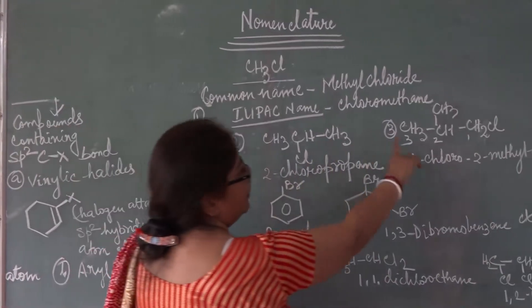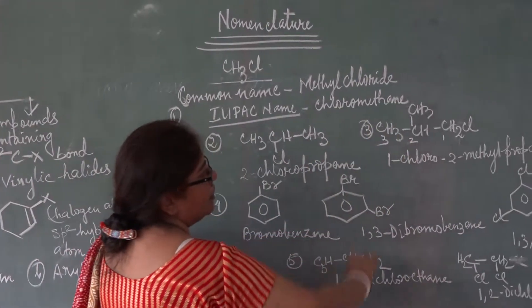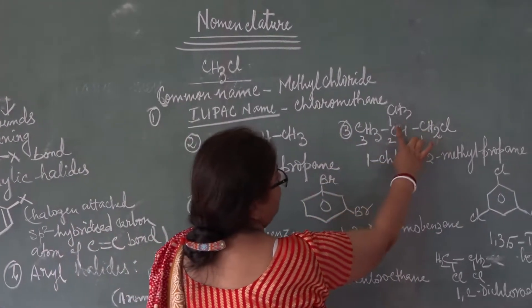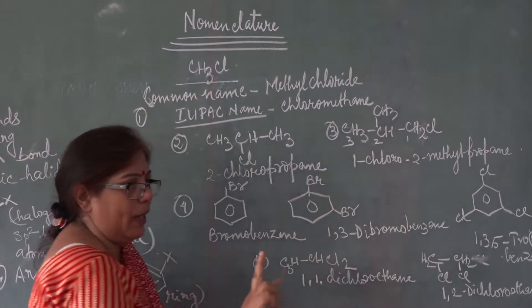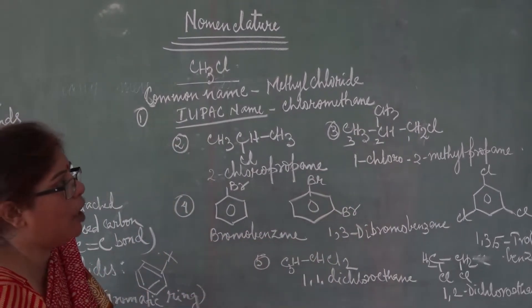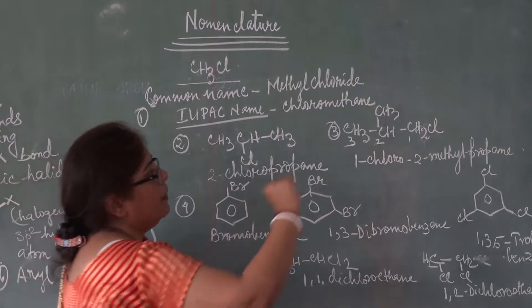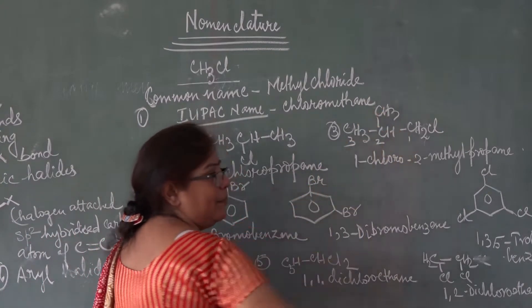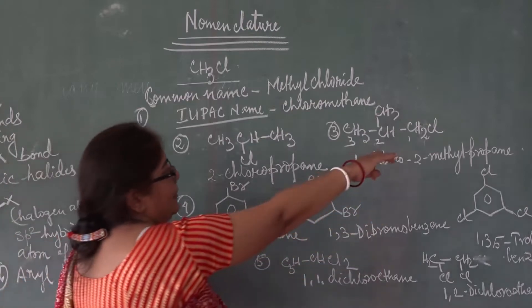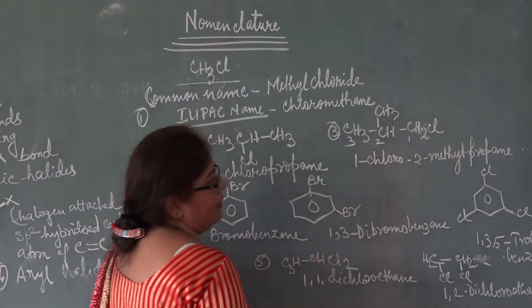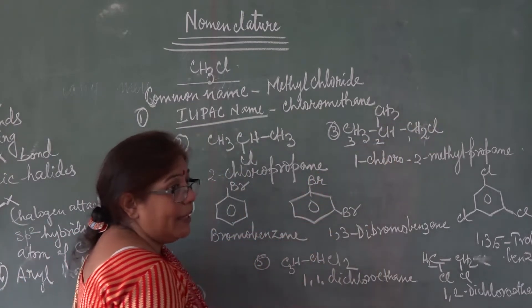Similarly, name this one. Here, one, two, three carbons. One, two, three carbons. Derivative will be of propane. Look here. Then in second carbon, there is CH3 and first carbon, Cl. What will be the name?